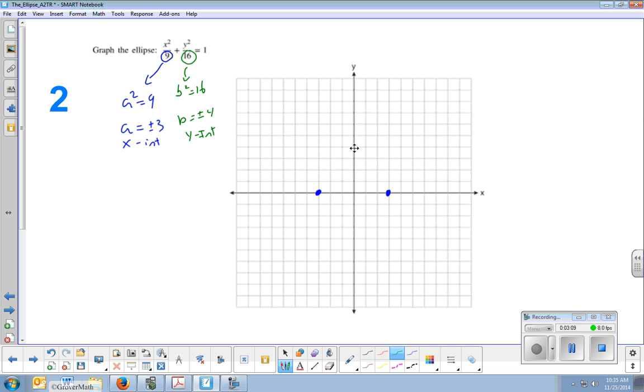And so plus or minus 4 is here and here. And then once you have your x-intercepts and your y-intercepts, the ellipse is very easy to graph. Well, on pen and paper, it might be kind of tough for me to graph this with a tablet here. I'll do my best, and please don't laugh at me.